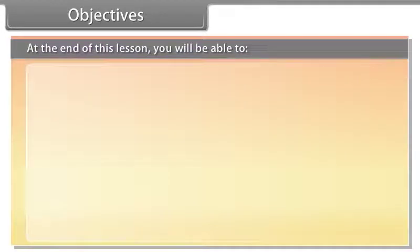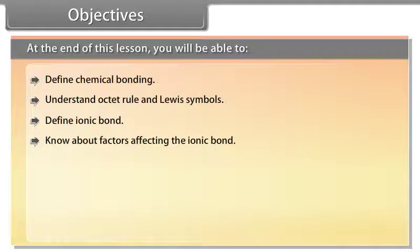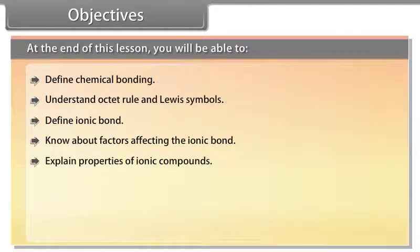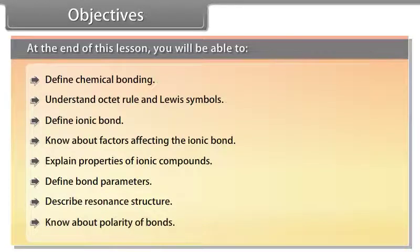Objectives. At the end of this lesson, you will be able to: define chemical bonding, understand the octet rule and Lewis symbols, define ionic bond, know about the factors affecting the ionic bond, explain properties of ionic compounds, define bond parameters, describe resonance structure, and know about polarity of bonds.